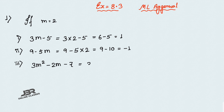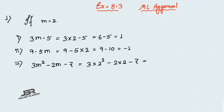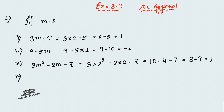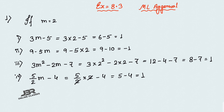The third one: 3m² minus 2m minus 7. Here 3 into m² means 3 into 2², which is 3 into 4 equals 12, minus 2 into 2 equals 4, minus 7. So 12 minus 4 minus 7 equals 1. The last one: 5 divided by 2m minus 4. Here m equals 2, so the 2s cancel out, giving 5 minus 4 equals 1. Sum number 1 is done.